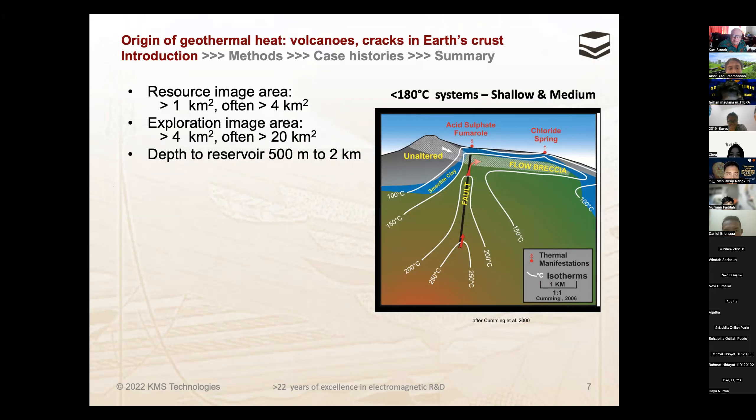Shallow geothermal, when the temperature is not so high, the magma chamber is deep in the earth. The exploration area is usually smaller, and the reservoirs are between 500 meters to 2 kilometers.